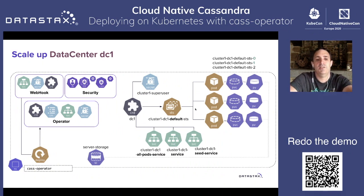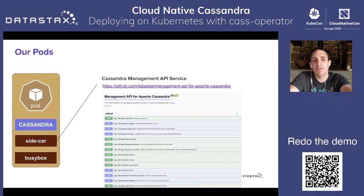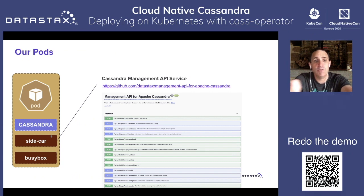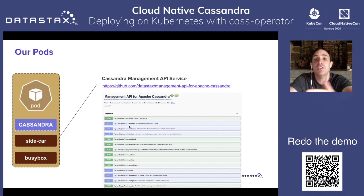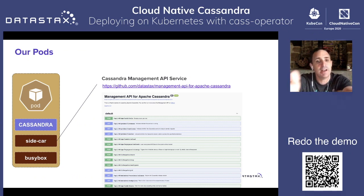But when does the operator know when to start another node? Because Cassandra alone is not Kubernetes ready. At DataStax, we had to create and open source a Cassandra management API service — a sidecar running in the pod that exposes a REST API for Kubernetes to know the liveness and readiness of each pod. You deploy a new YAML, the operator matches the desired state to what it should be, and executes the commands to make the Cassandra cluster fit the reality.